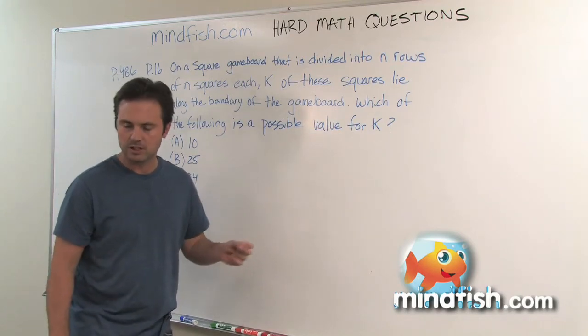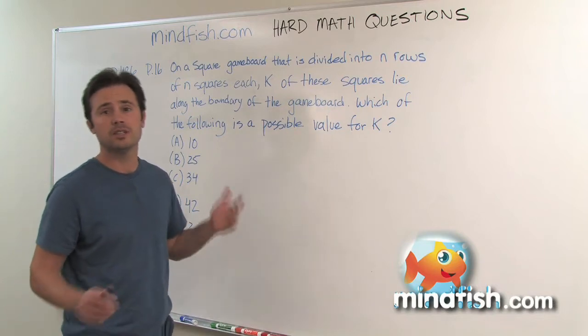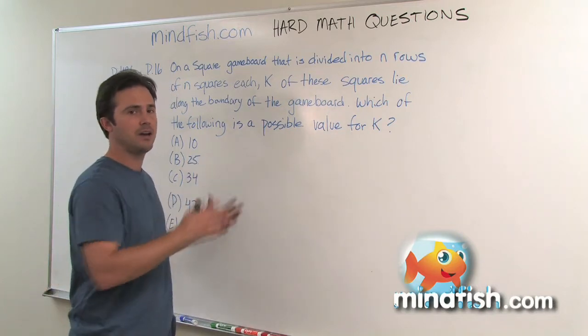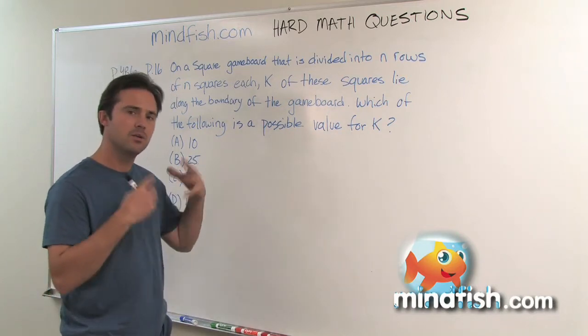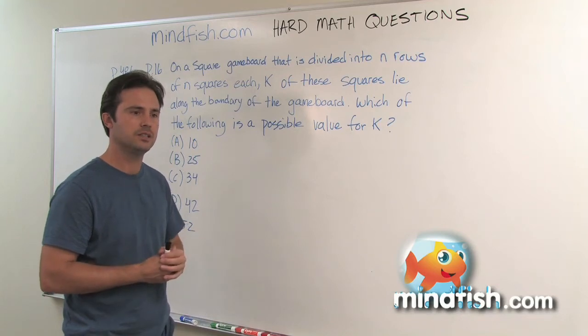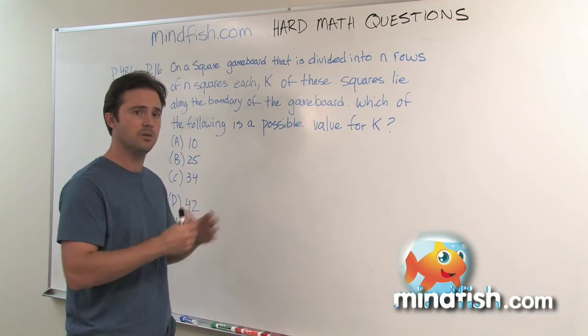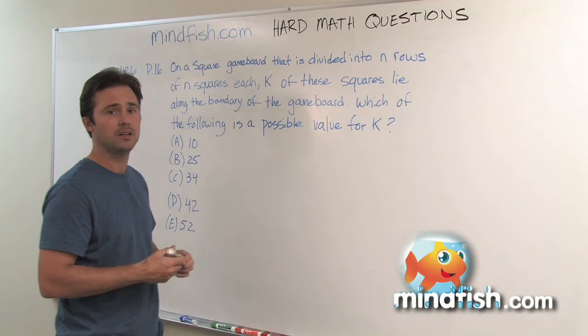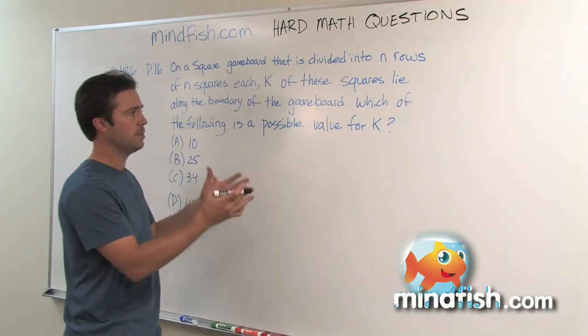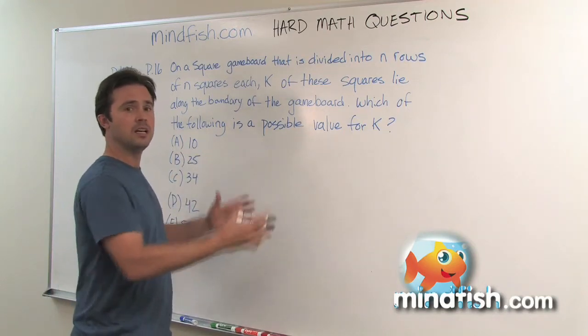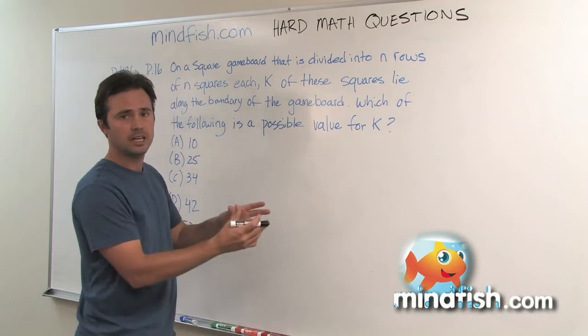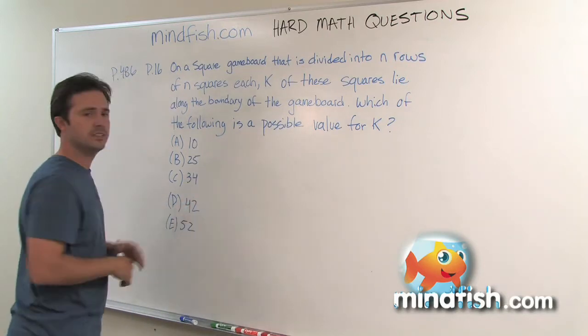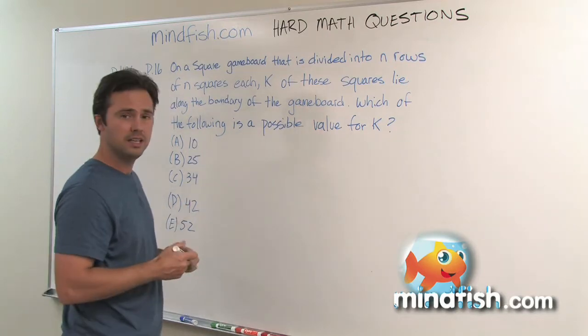So the reason this question is hard is that there's no specific equation that's going to solve it. I call this a pattern or sequence question, and one of the ways that we try to solve pattern or sequence questions is to start with something we do know, which is the beginning of the pattern. So what we're going to do is basically build some game boards, take a look at our n's, take a look at our k's, and systematically eliminate some of these answers until we can figure out the one that is possible.